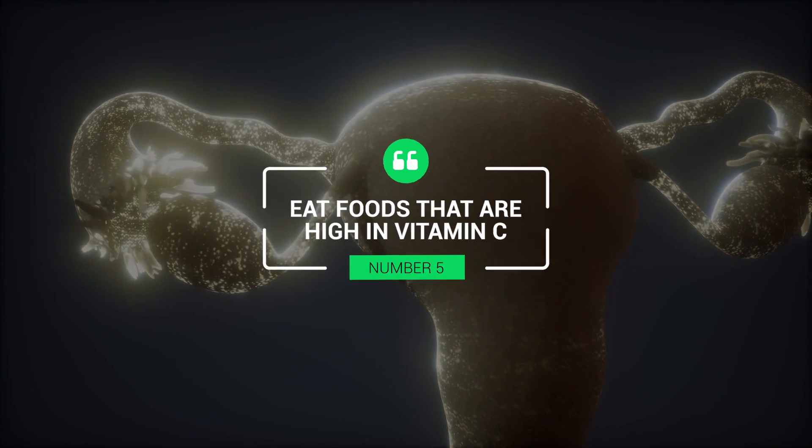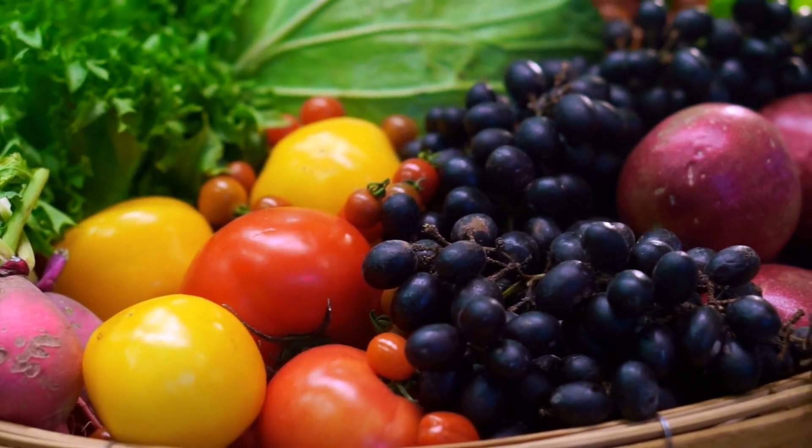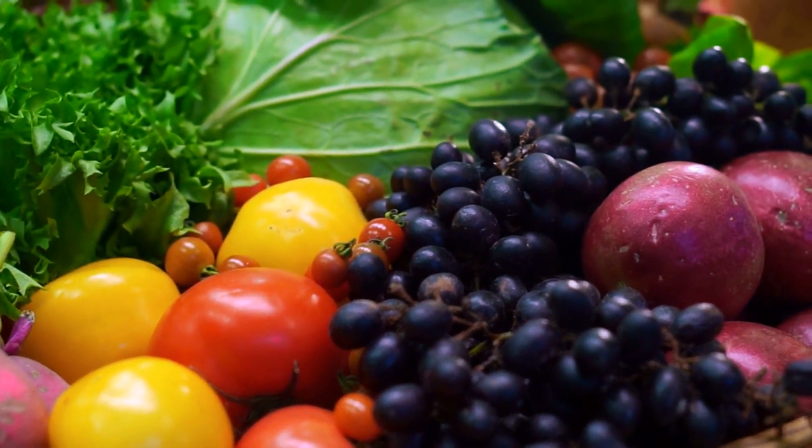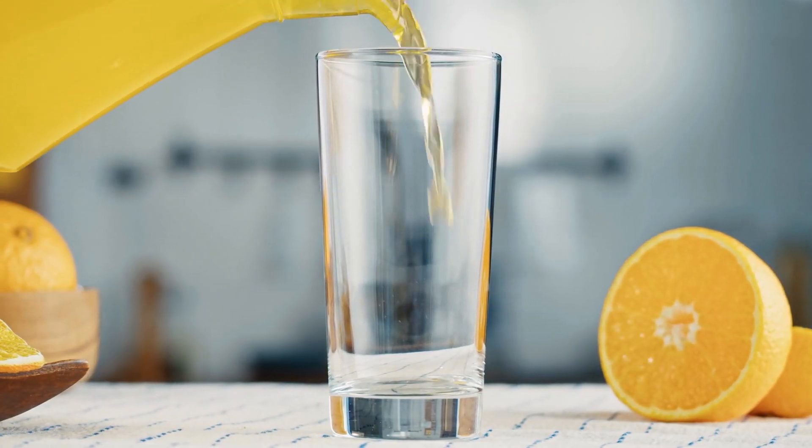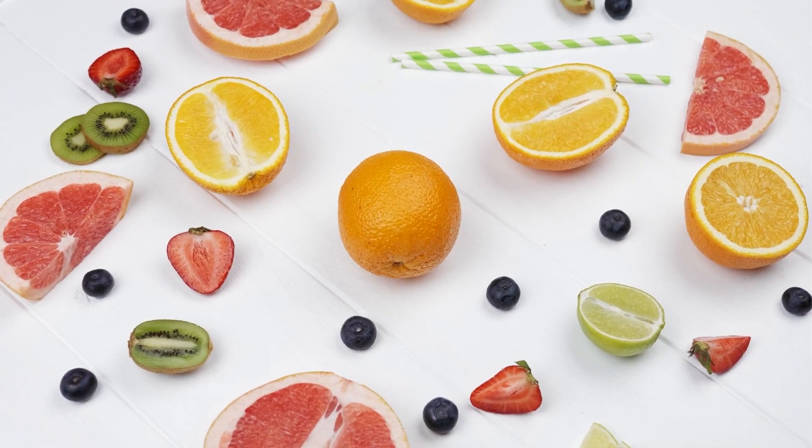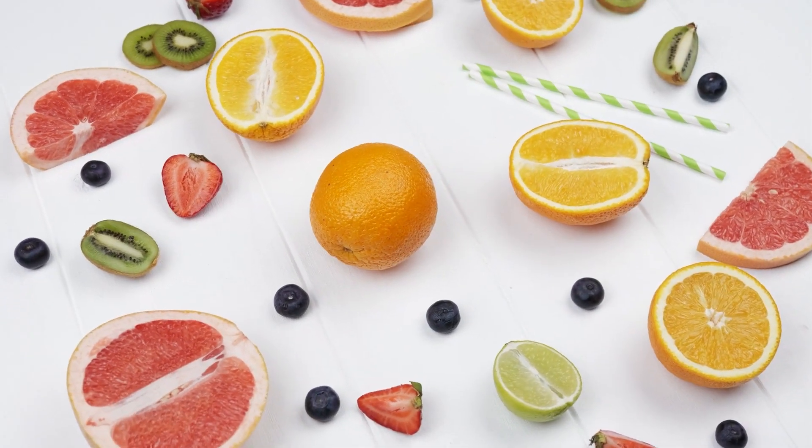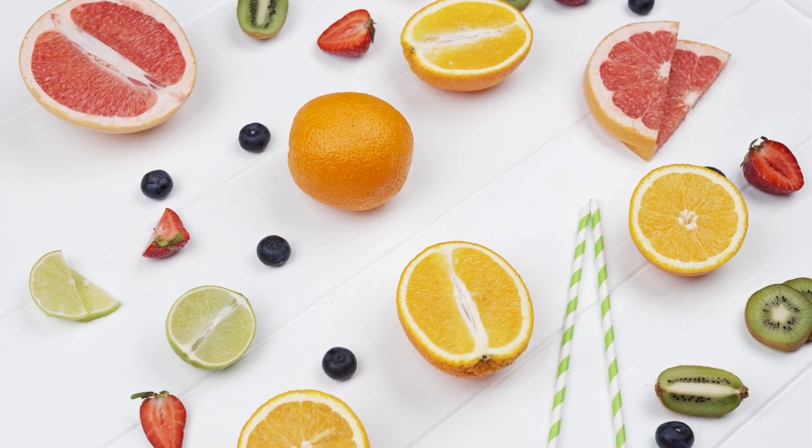5. Eat foods that are high in vitamin C. Vitamin C is an essential nutrient that helps in hormone production including progesterone. The nutrient helps maintain a balance between estrogen and progesterone. Studies suggest that consuming vitamin C-rich foods such as oranges, papayas, kiwis, and strawberries can help increase progesterone levels.